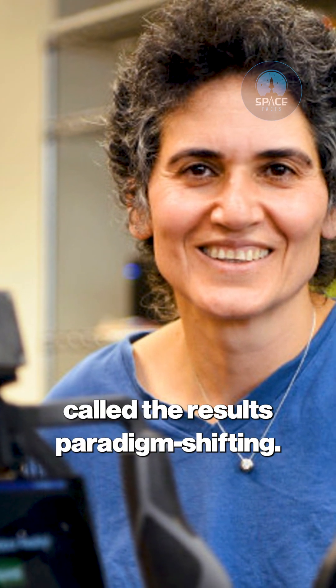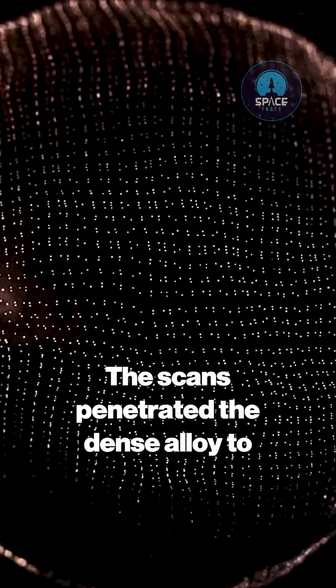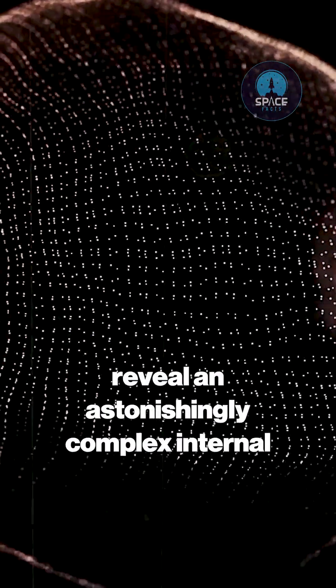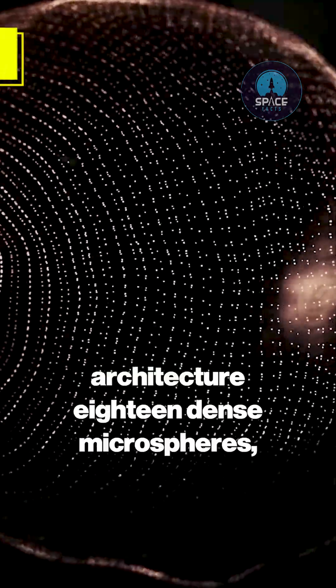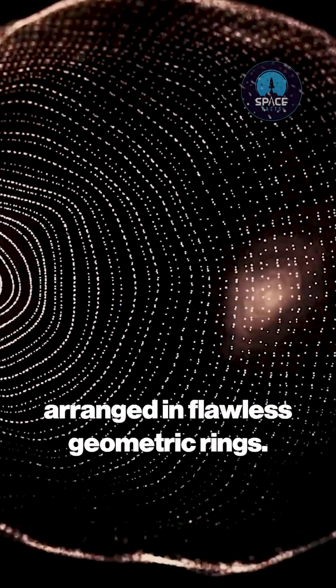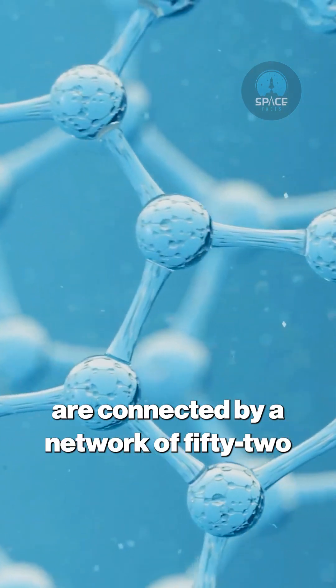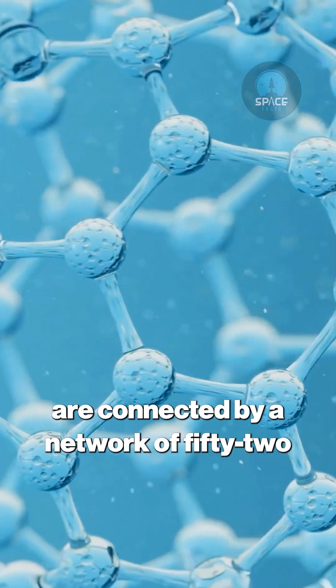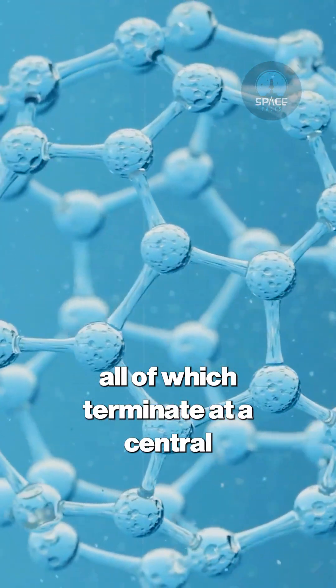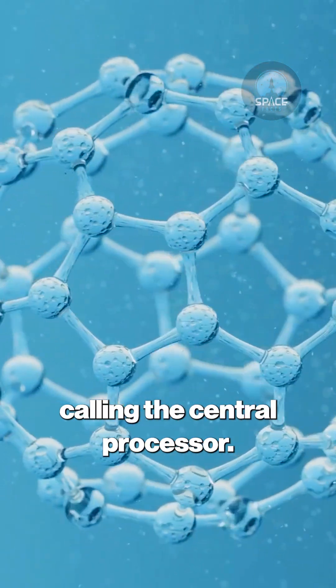The scans penetrated the dense alloy to reveal an astonishingly complex internal architecture: 18 dense microspheres arranged in flawless geometric rings. These aren't just decorative beads—they are connected by a network of 52 hair-thin filaments, all of which terminate at a central rectangular component the MIT team is calling the central processor.